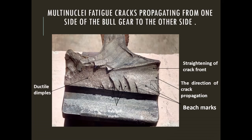This is a case of multi-nuclei fatigue crack propagation in a gear. The crack is propagating at a very fast rate, starting from the trough of the gear and progressing towards its center. You can see a large number of ratchet marks — four or five of them — which are individual fatigue cracks converging at a particular point.